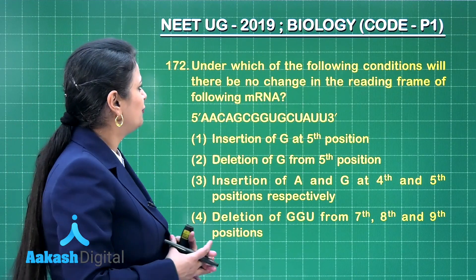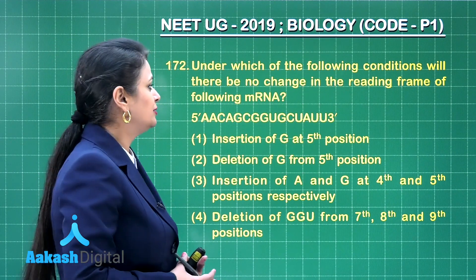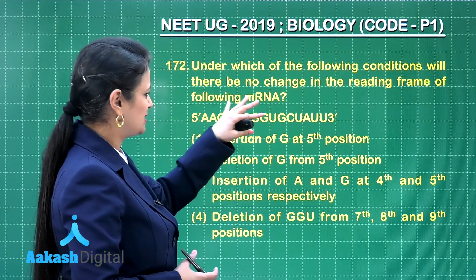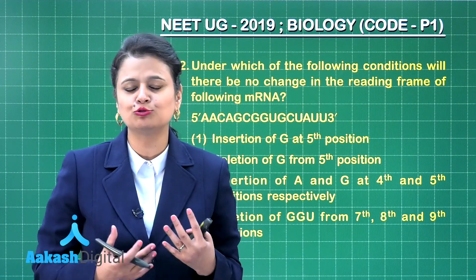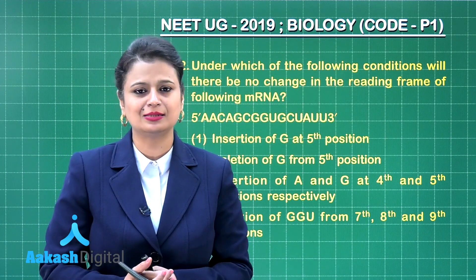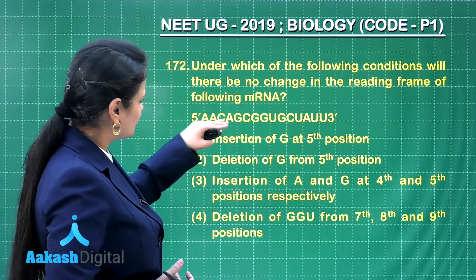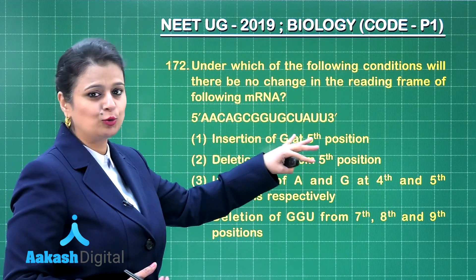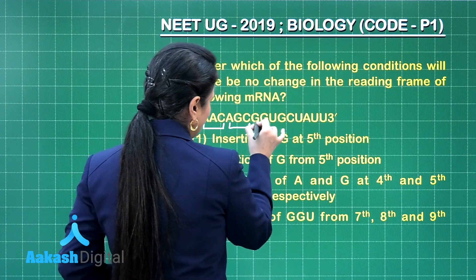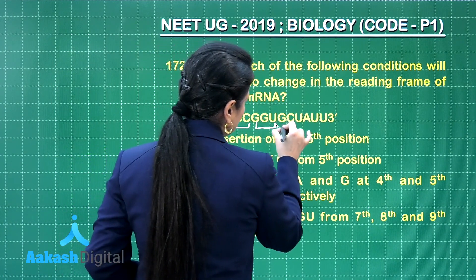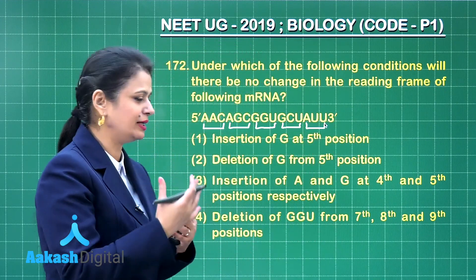Question number 172: under which of the following conditions will there be no change in the reading frame of the following messenger RNA? Three nitrogenous bases have the ability to code for one amino acid, and these three bases form one codon. Looking at this mRNA, we can identify codons: AAC is the first, AGC is second, GGU is third, GCU is fourth, and fifth. This is the normal reading frame.